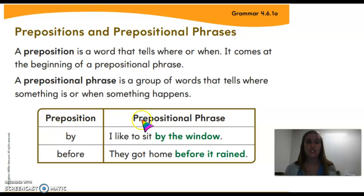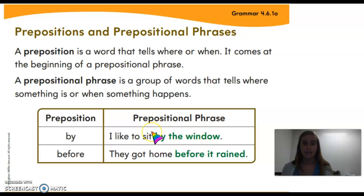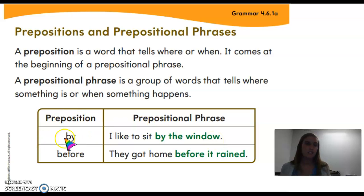The prepositional phrase is the group of words that tells us where something is or when something happens. So in this prepositional phrase it says, 'I like to sit by the window.' 'By' is my preposition because it tells me where, but then my phrase is 'by the window' — it gives me more detail. So that preposition is 'by'; it tells me where.